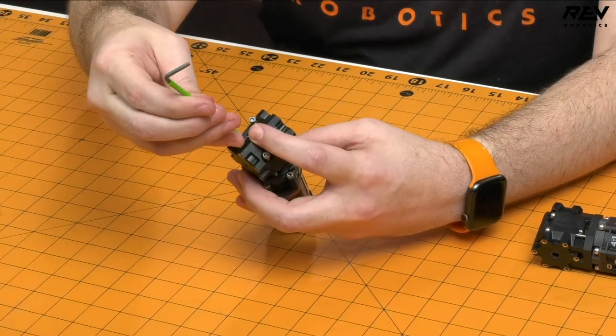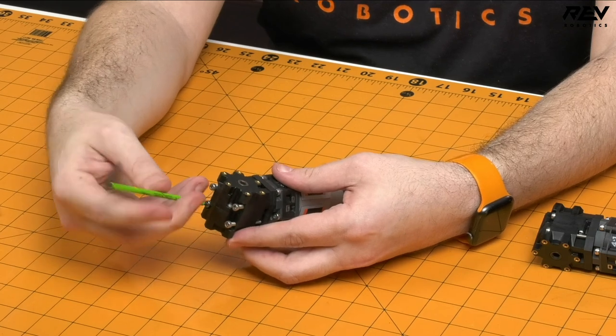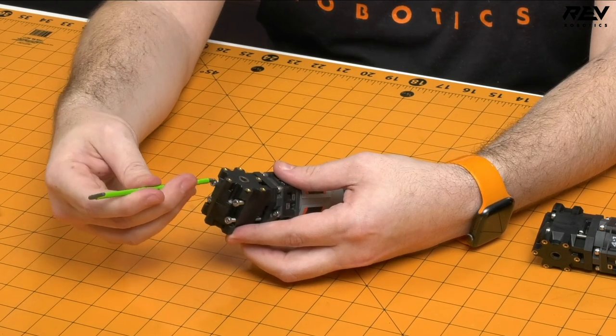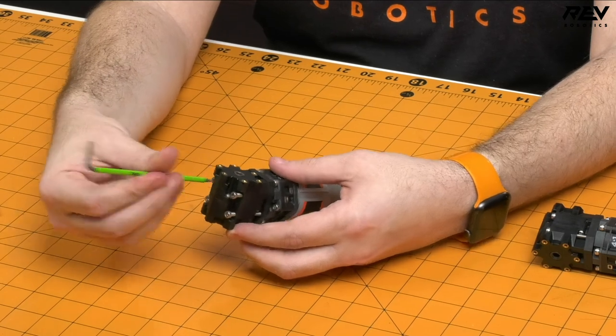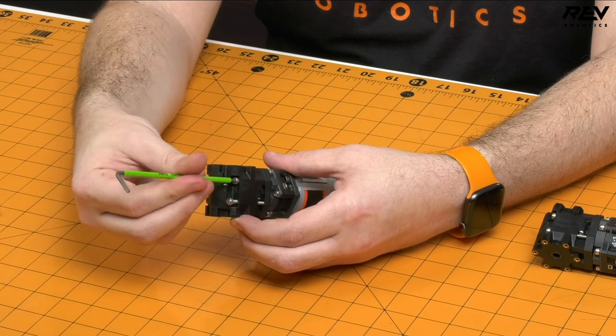So if you use your two and a half millimeter Allen wrench to screw these down, it is as simple as that. Tighten these up and you are totally done and ready to use this.